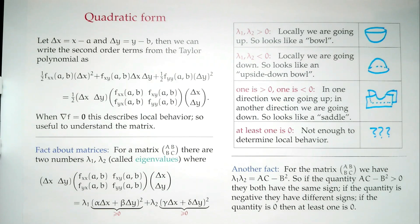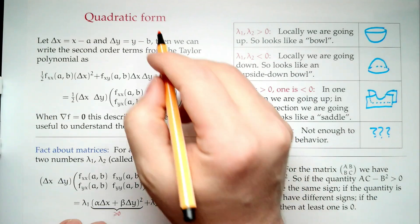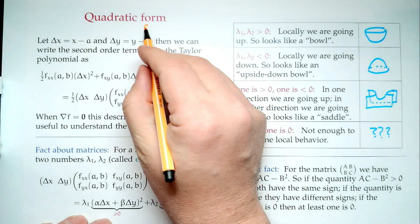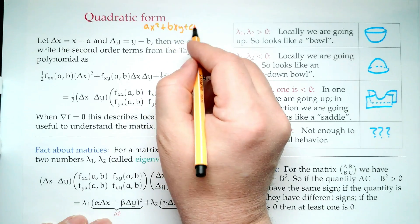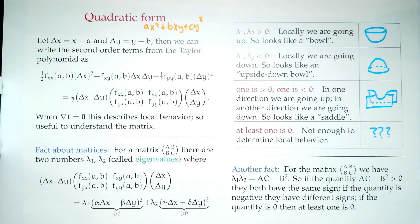We're going to start today by picking up from last time, because at the end we were rushing to talk about what we call quadratic form. It sounds complicated, but quadratic form basically means a polynomial — in particular, something of the form ax² + bxy + cy². That's really what we mean when we talk about a quadratic: a second-degree polynomial.